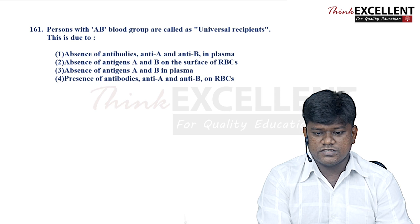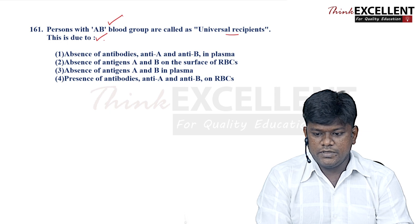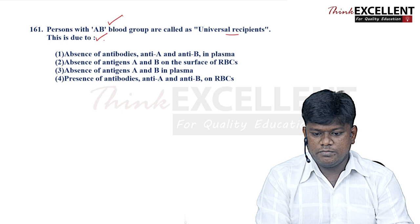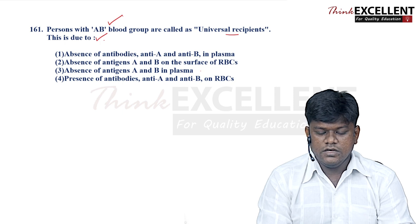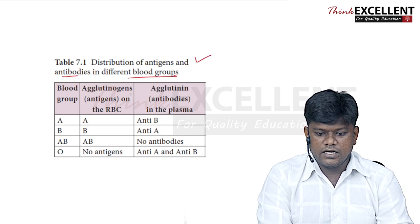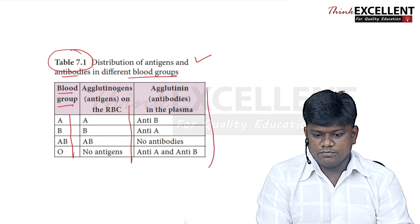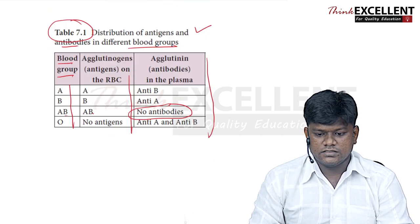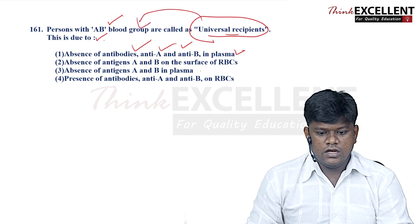Question 161: persons with AB blood group are called universal recipients. This is due to the absence of antibodies anti-A and anti-B in plasma. From table 7.1 in the state board syllabus, you can see blood group AB has antigens A and B but no antibodies. Option 1 — absence of antibodies anti-A and anti-B in plasma — is the right answer.